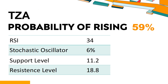What technical factors drive TZA performance? Technical signals and analysis: TZA's 14-day Relative Strength Index (RSI) value was 34. When the RSI is above 25 and below 50, it generally indicates that the stock is moderately bearish. This means that the security's price has been falling but has not yet reached oversold levels, typically considered an RSI reading of 25 or lower.